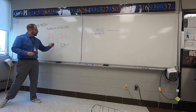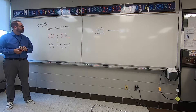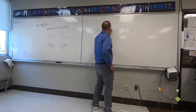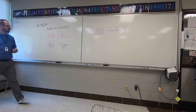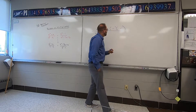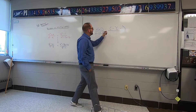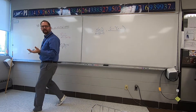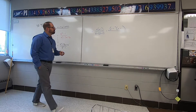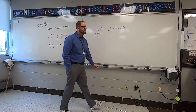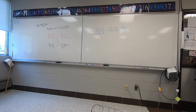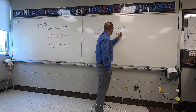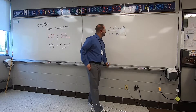Upper right corner: trinomial rule. So trinomial is going to be two parentheses. The symbols in each parenthesis are both plus signs. We break up X squared into X and X in the front. Now we break up the six in the back — numbers that multiply to give me six: two and three. That makes the five in the middle, so two and three. And the lower right corner is a difference of squares: two parentheses, plus and minus, X and X, one and one.